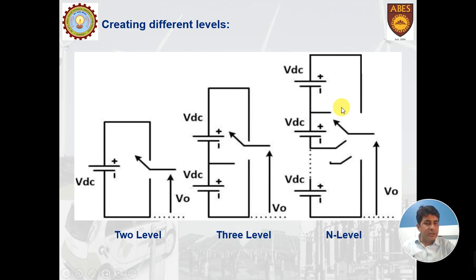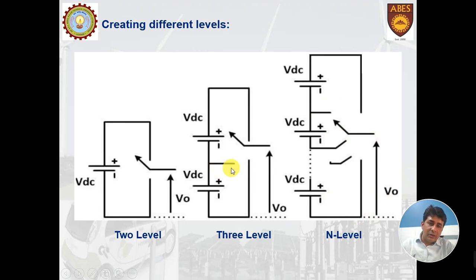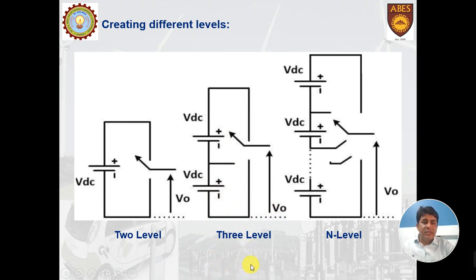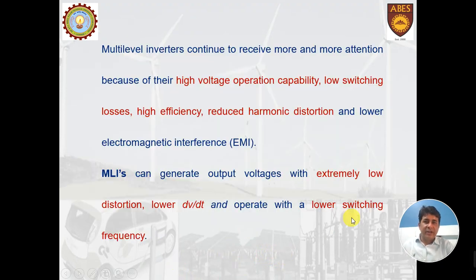For N levels, if the switch is placed at the top the output is N·VDC; moving it down gives N−1, N−2·VDC, and so on down to zero. If a similar structure is also prepared for the negative side, we can have levels for negative voltages as well. Using this concept we develop a multi-level inverter.